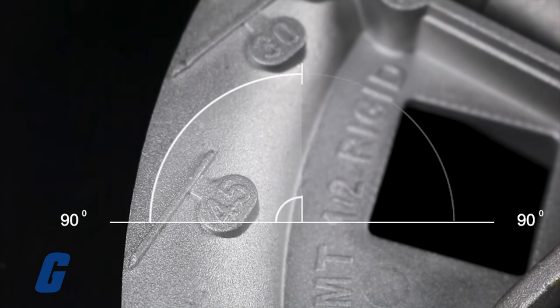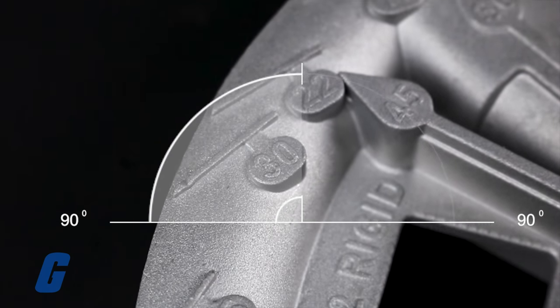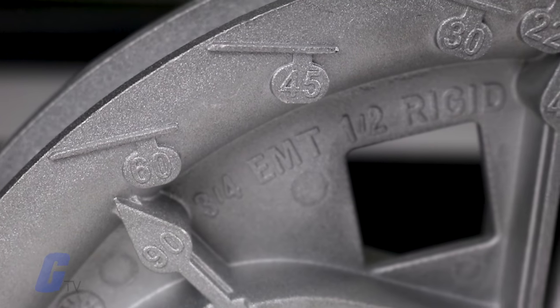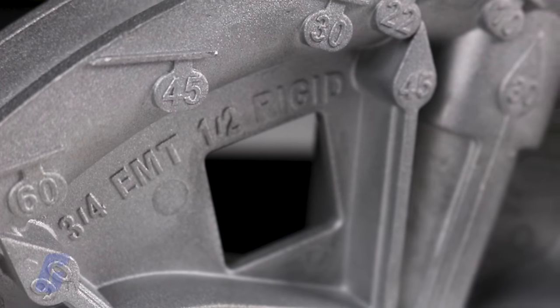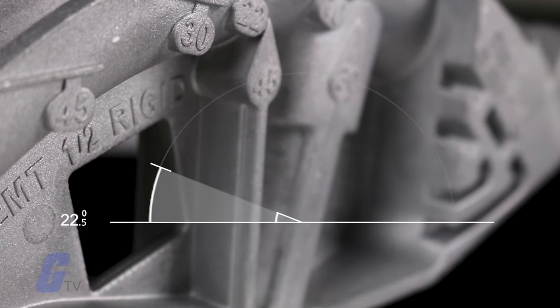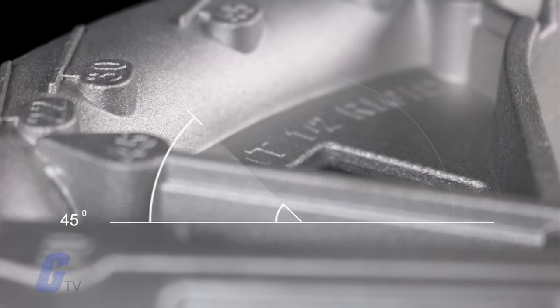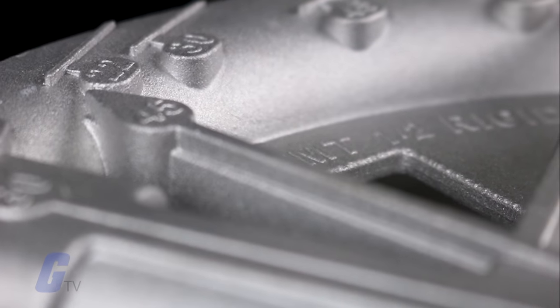This is the point where the bent conduit will reach a right angle. This is one of the more commonly used angle marks. Other angle marks can include 10, 22.5, 30, 45, and 60 degree angles.